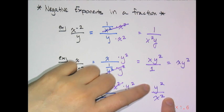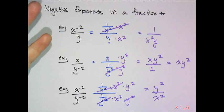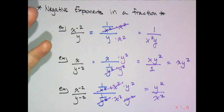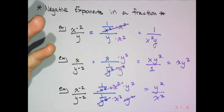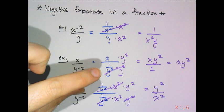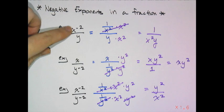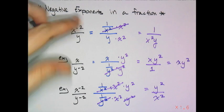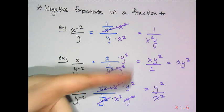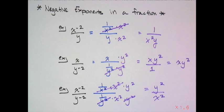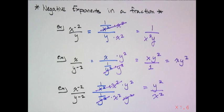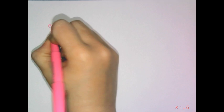This makes sense because a reciprocal means you flip things. If it started in the numerator, it ends up in the denominator. If it's in the denominator, it becomes positive in the numerator. So let's see if we can use this shortcut to simplify some expressions.